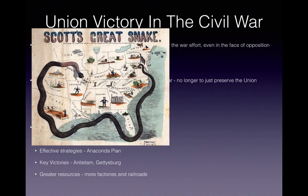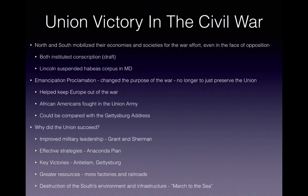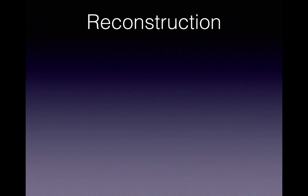Why did the Union succeed? They had improved military leadership — people like Grant and Sherman. They had effective strategies like the Anaconda Plan, which was a blockade. Key victories like Antietam led to the Emancipation Proclamation, and also Gettysburg. They had greater resources: more factories, more railroads, more population. The South was destroyed as a result of the war — think of Sherman's March to the Sea, in which much of the South's infrastructure and environment was destroyed.